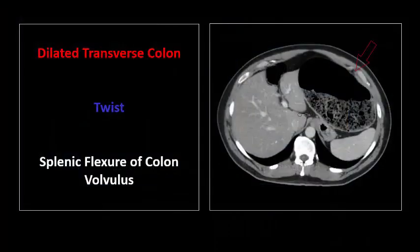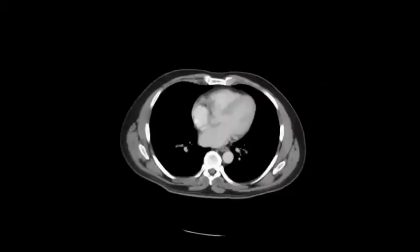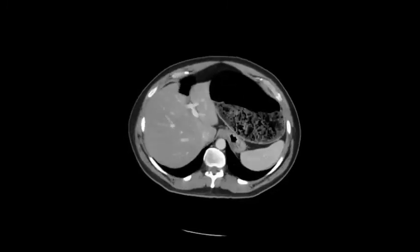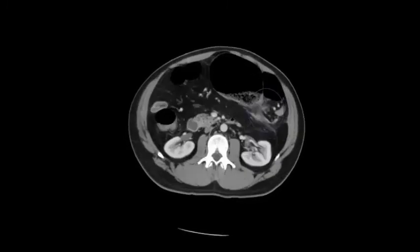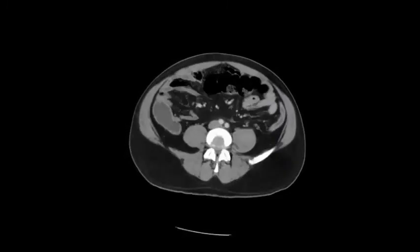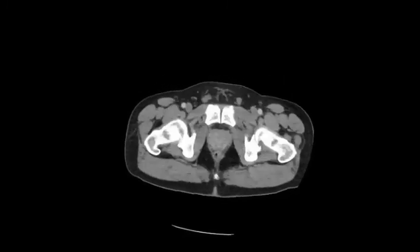Moving on to the splenic flexure. Again we see the dilated transverse colon, and the twist of the mesentery now in the left upper quadrant, compatible with splenic flexure volvulus. The axial series again shows the dilated transverse colon with a swirling pattern in the left upper quadrant, compatible with large bowel obstruction secondary to splenic flexure volvulus.